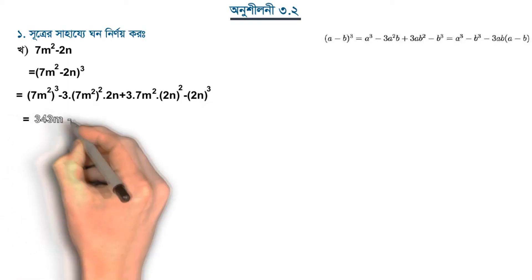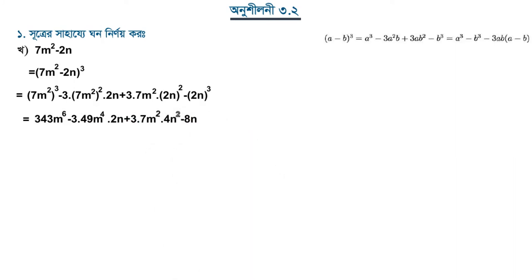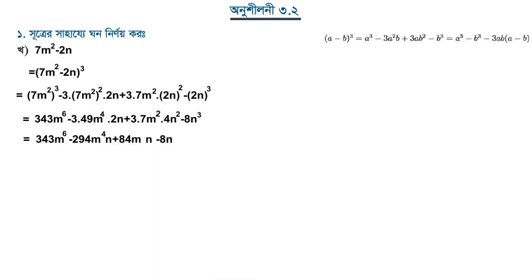After multiplying out, the result becomes: 343m⁶ minus 8n³ plus 3 into 7 into 4, which gives 5 plus 3 into 7 into 4 equals 84mn squared, minus 8n cube. This is the final result.